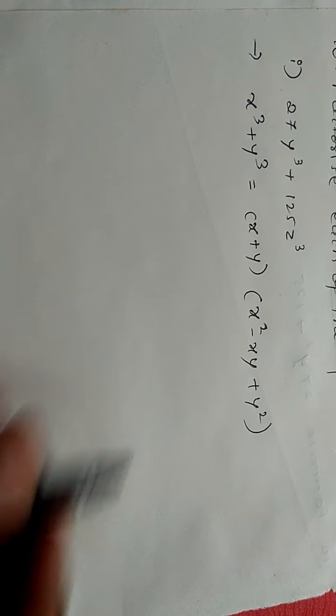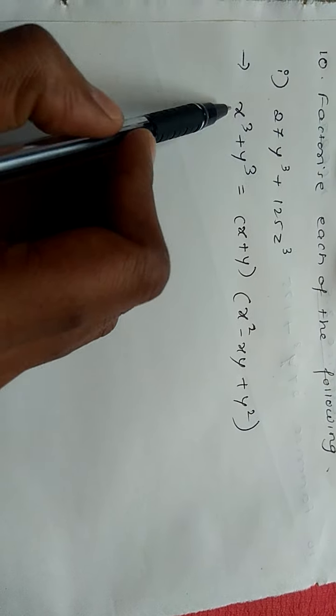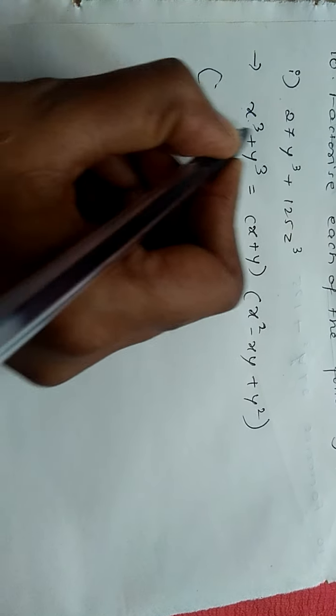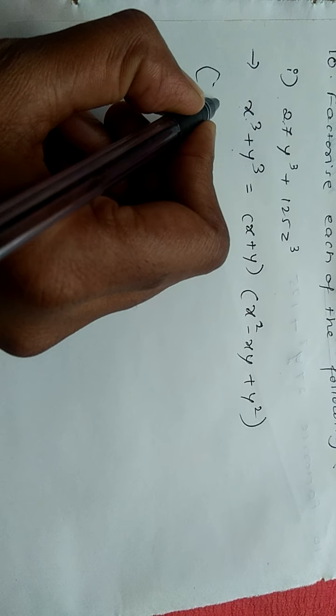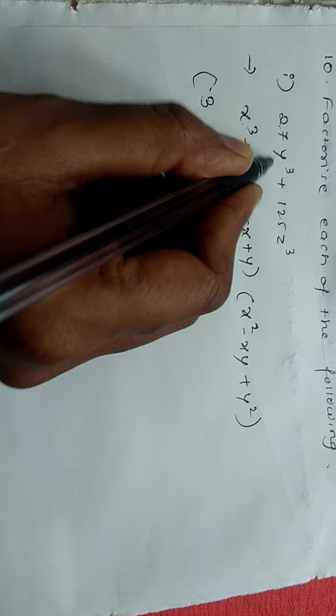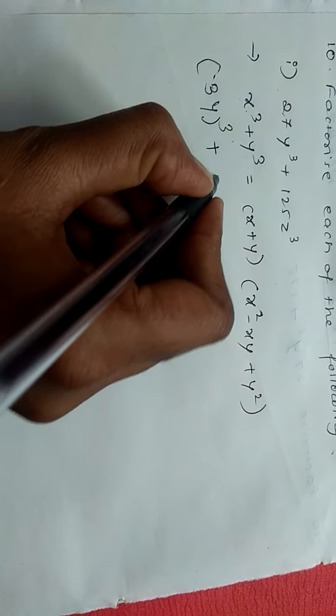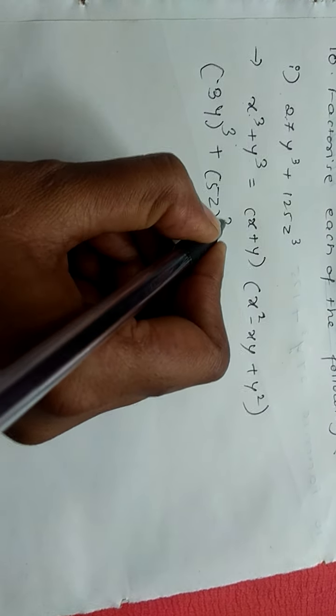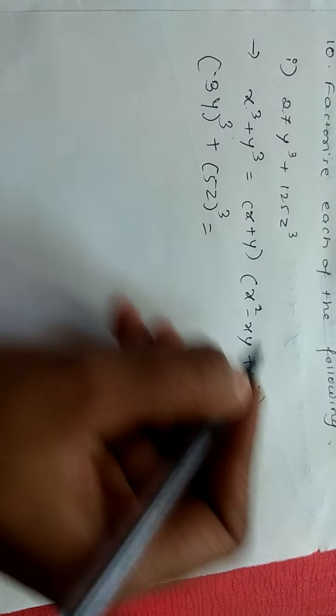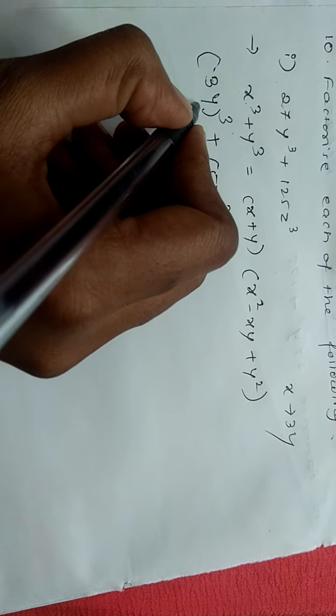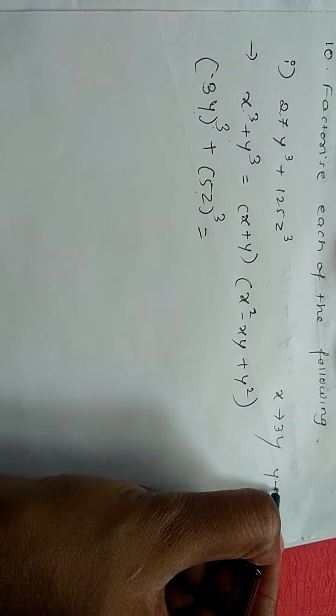So let us write that identity first. I wrote this identity: x cube plus y cube equals to this. So here we have to write this in x cube and y cube form. So 27 is a cube number, that is cube of 3: 3y whole cube plus 125 is a cube of 5, that's why 5z whole cube. So we got here LHS that equals RHS.